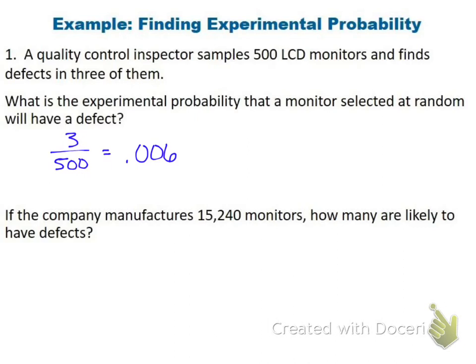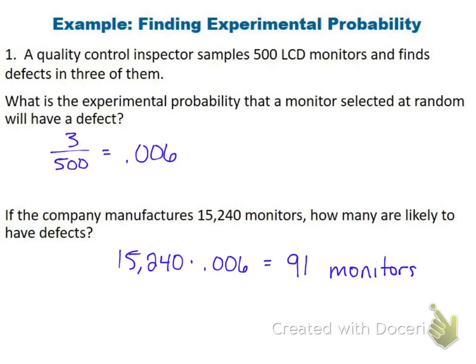Using that 0.006 as the probability of a defect, if the company manufactures 15,240 monitors, we multiply 15,240 by 0.006. That gives us about 91, so approximately 91 monitors out of the entire batch are likely to have defects.